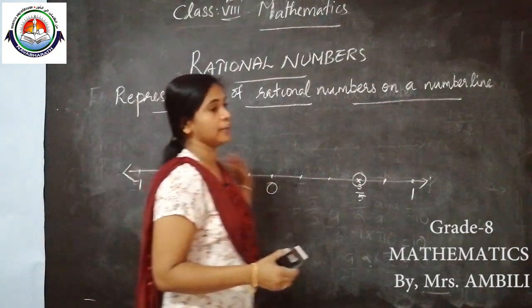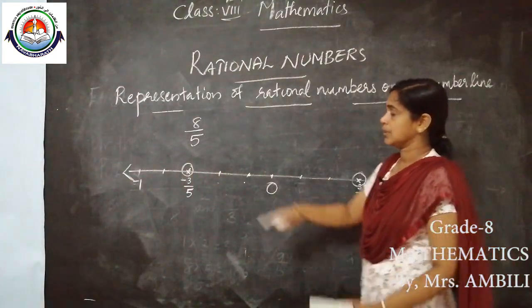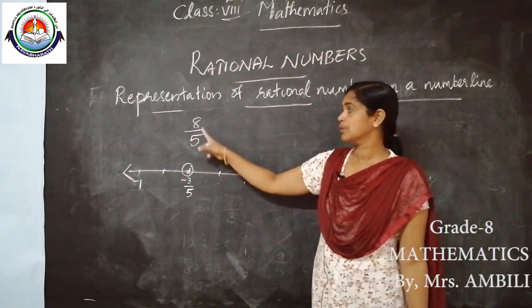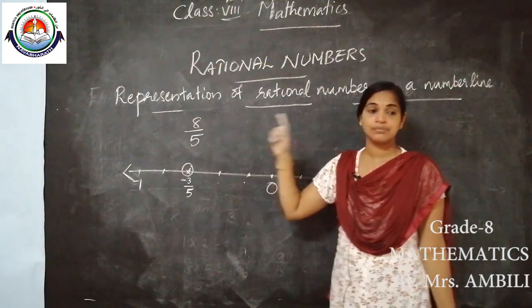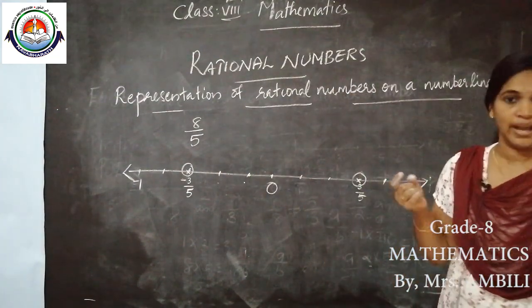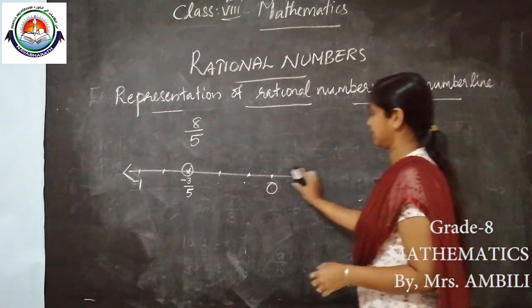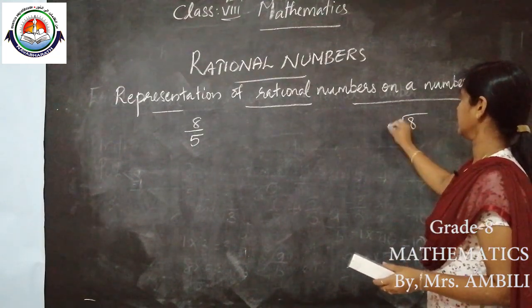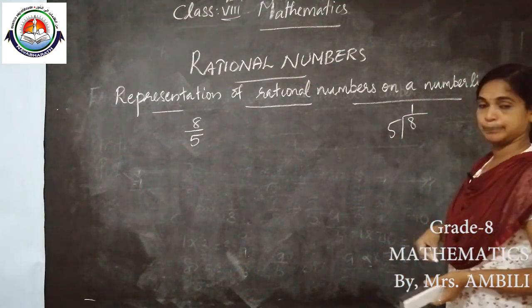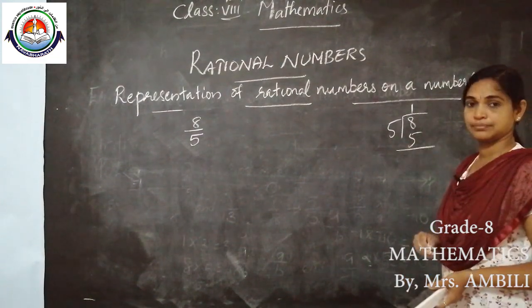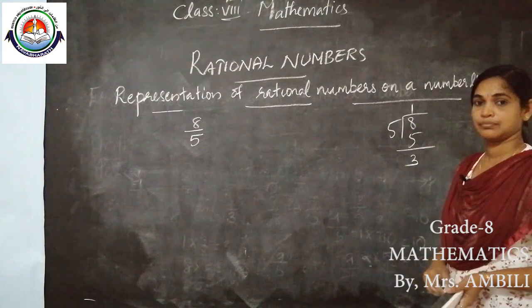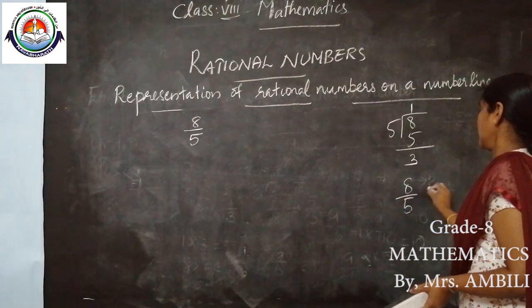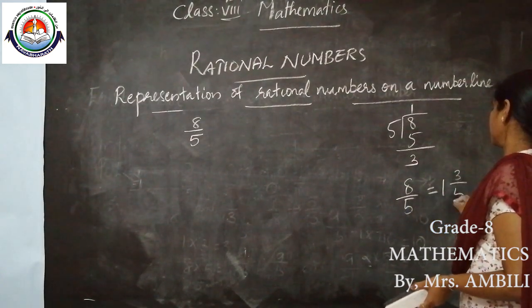Next, represent 8/5 on a number line. Here the numerator is greater than the denominator, so first we need to change this into a mixed fraction. 8 divided by 5 — one time 5 goes, remainder 3 — so 8/5 equals 1 and 3/5.